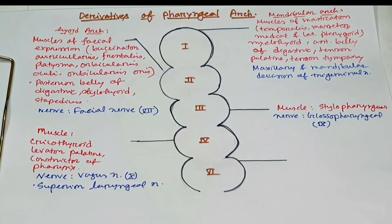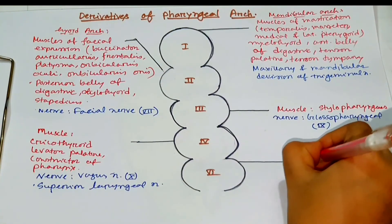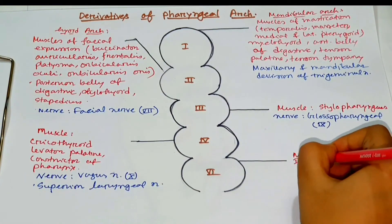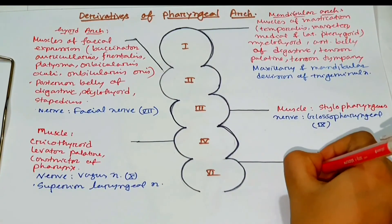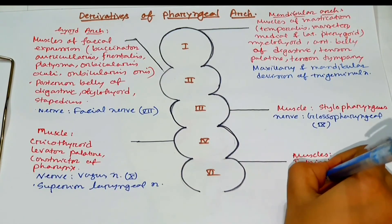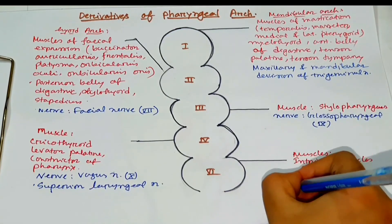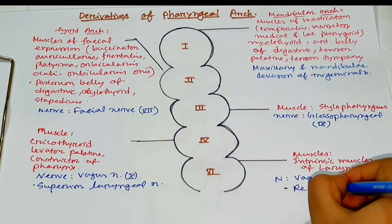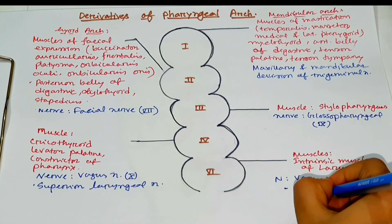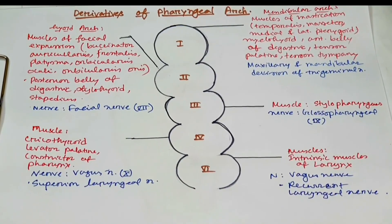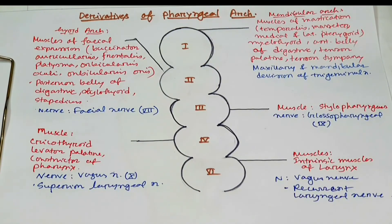Coming to the sixth arch, the muscles derived from the sixth arch are the intrinsic muscles of the larynx. The nerve is the recurrent laryngeal branch of the vagus nerve. These are all the nerve and muscular derivatives of the pharyngeal arches.